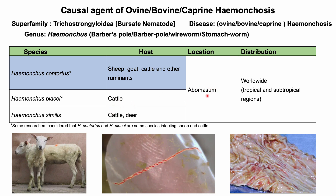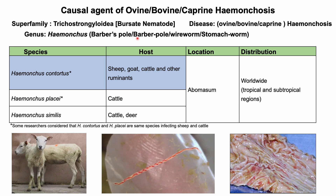The location of this parasite is in the abomasum. The distribution is worldwide, mostly in tropical and subtropical regions. The parasites under this genera are called barber pole worms due to their similarity to the barber pole, and are also known as stomach worms due to their location in the abomasum. The disease caused by this parasite is called hemonchosis.